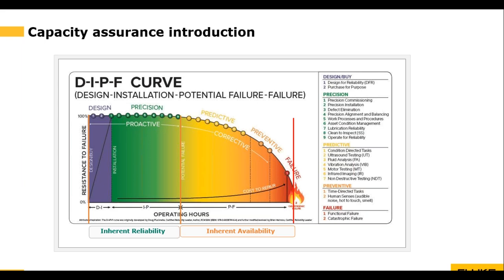What does this really mean? Focus on making the difference between these two parts — the design and installation on the proactive side is important because any asset that's properly designed and installed means its capacity will be 100%. But if the design and precision isn't good, we're never going to get 100% on the right side. That means we can never fix a problem with maintenance alone — we can never maintain our way out of a bad design and installation.